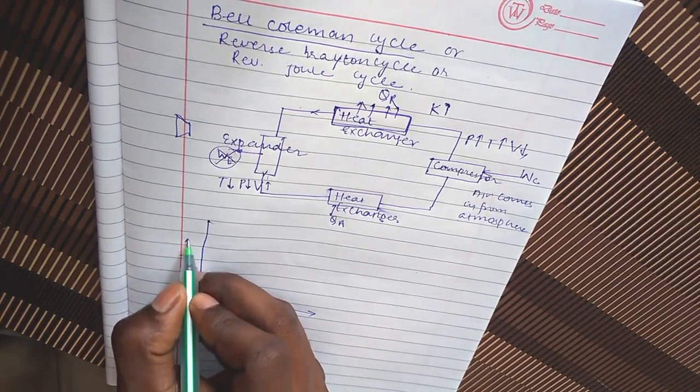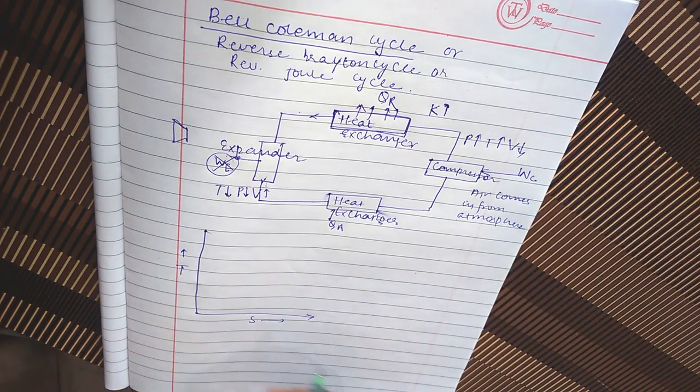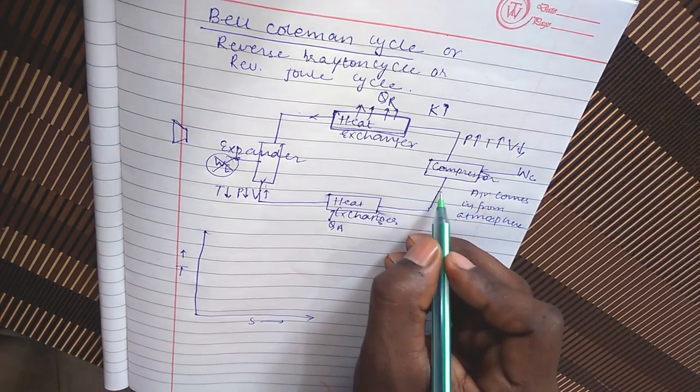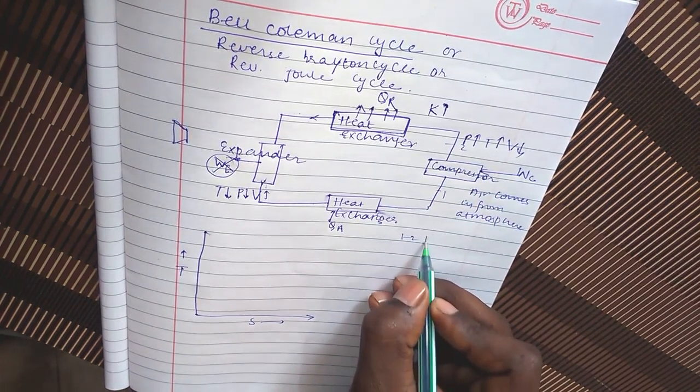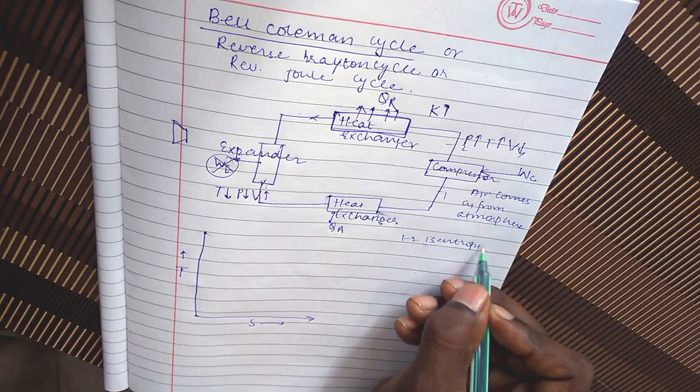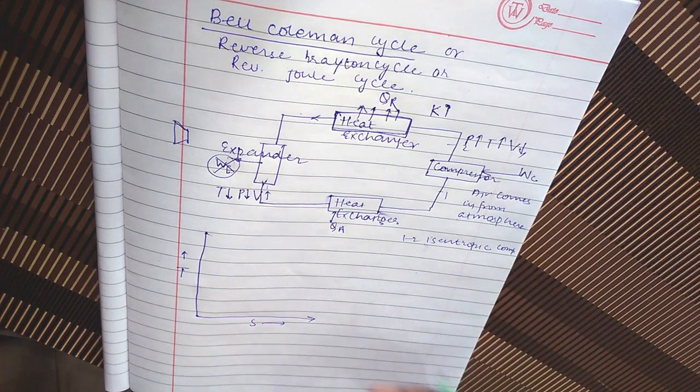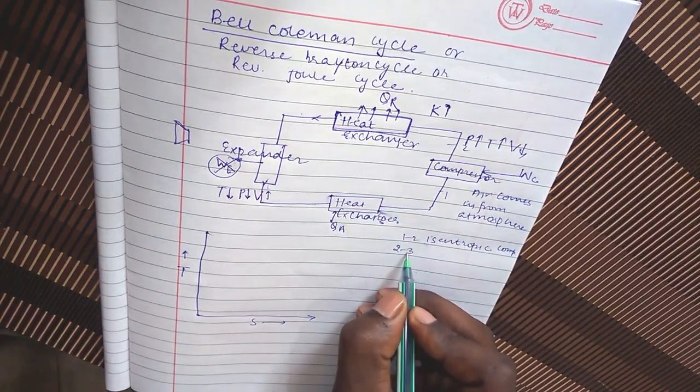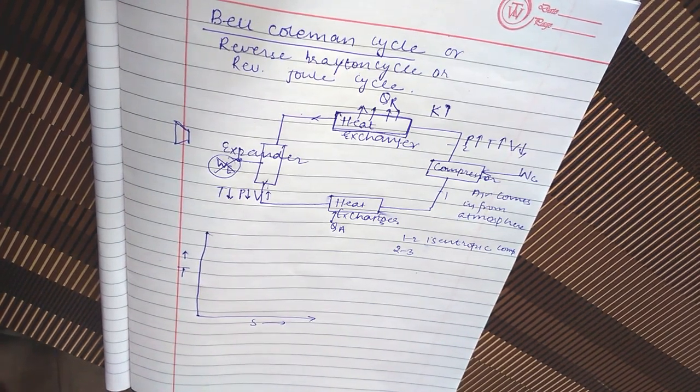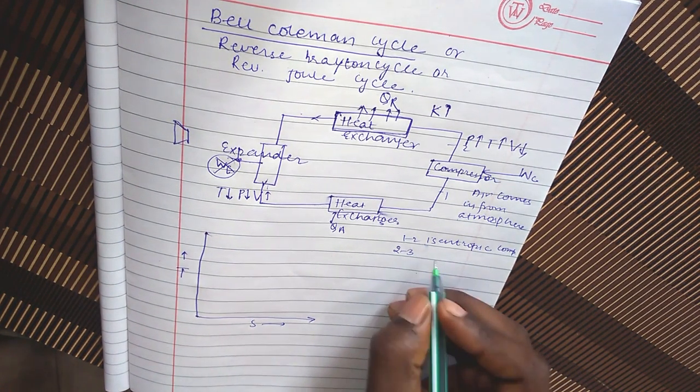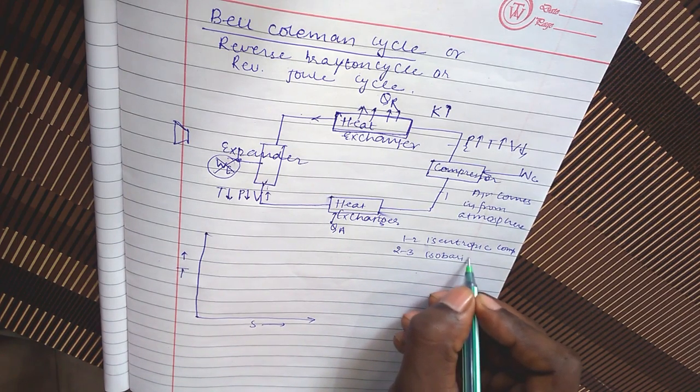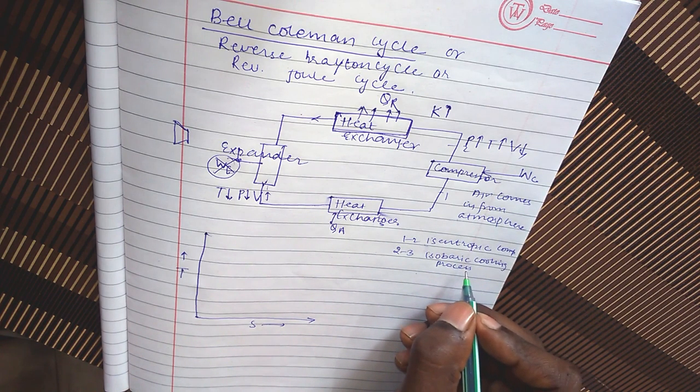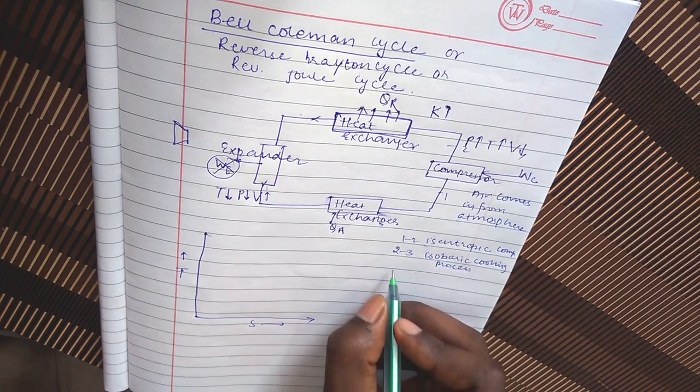Now let's look at T-S diagram. The first process, WC, is an isentropic compression. Suppose this is one to two - it's isentropic compression. Next, two to three is an isobaric cooling process, or constant pressure cooling process.